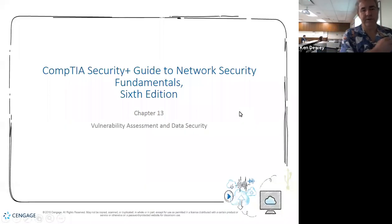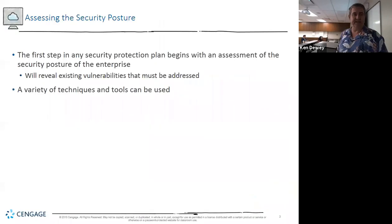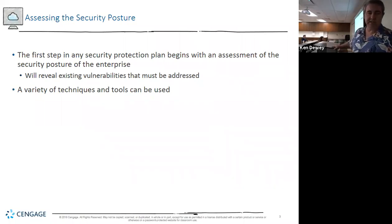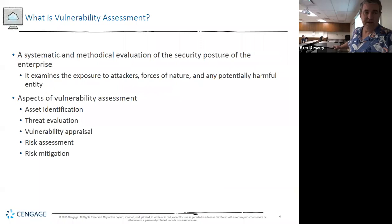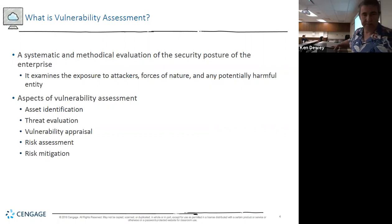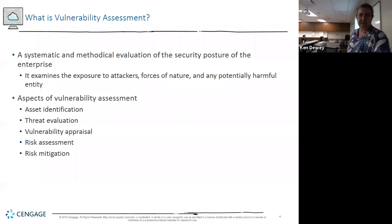This is Chapter 13, Vulnerability Assessment and Beta Security. They talk about accessing a security posture. There are lots of vulnerabilities in this chapter, and we're going to talk about some of the tools and risks involved. They talk about examining or evaluating your posture, asset identification, and threat evaluation. We're going to walk through each one of these things in the next couple slides.